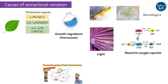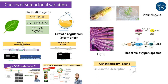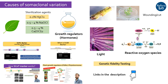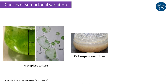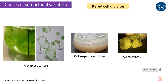Genetic fidelity testing using genetic markers like RAPDs, ISSRs, and SCOTs is routinely done to test if the plants are genetically identical or have accumulated genetic variation. Do check out my detailed video on each of these markers. Somaclonal variation is primarily seen during protoplast culture, cell suspension culture, or callus culture, when an undifferentiated mass of cells rapidly divides, increasing the chances of genetic variation accumulation. Subculturing plants for a large number of generations also increases the chances of somaclonal variation for the same reason.